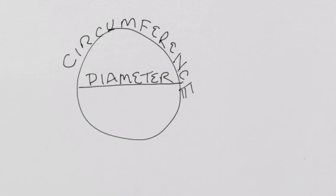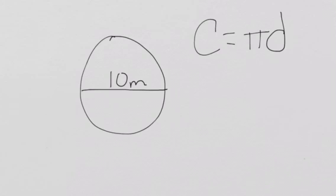Now this formula is really easy to use, but I'm going to show you how to express your answers in a couple of ways. Circumference equals pi times diameter. So if our diameter is 10, all we would have to do is say circumference equals 10 pi.